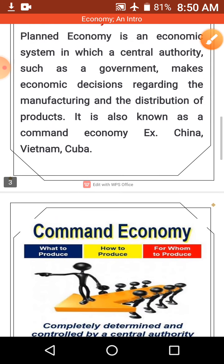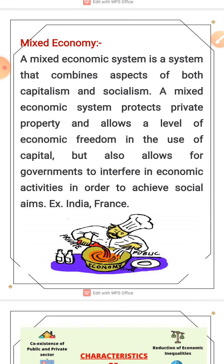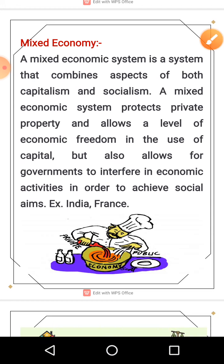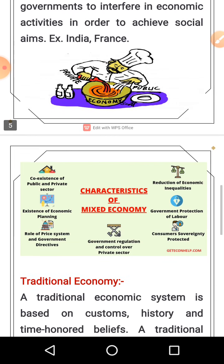Examples of planned economy are China, Vietnam, and Cuba. Mixed economy is a combo of planned economy and market economy. India is the best example — many things are left to the market, and many things are kept under government regulation and control.